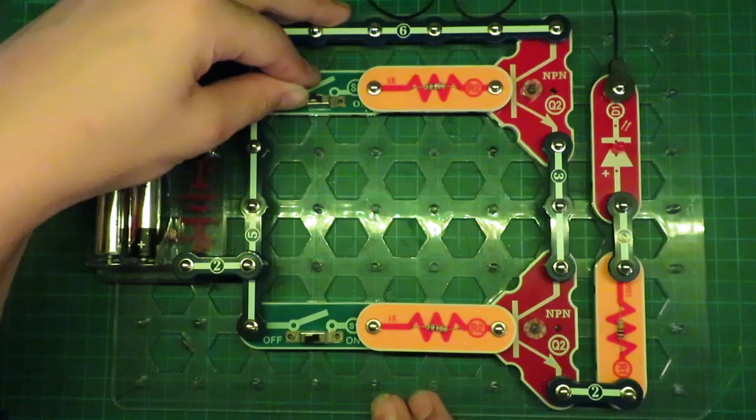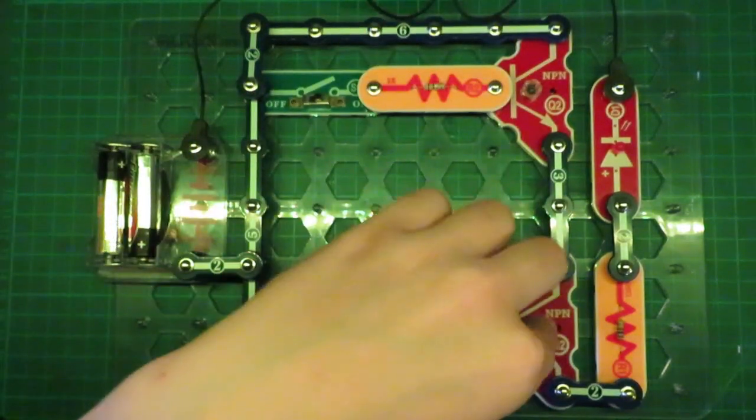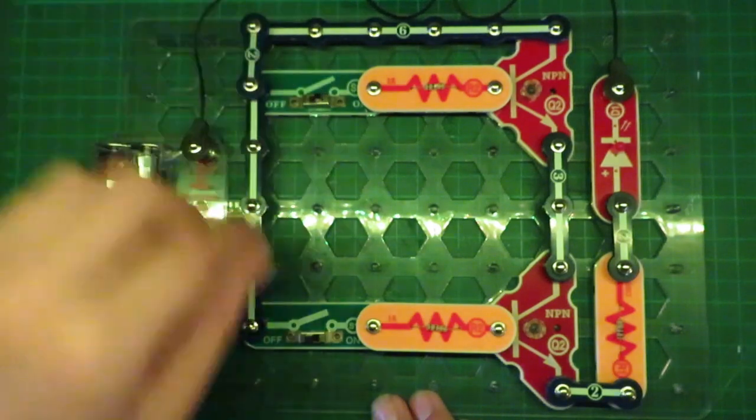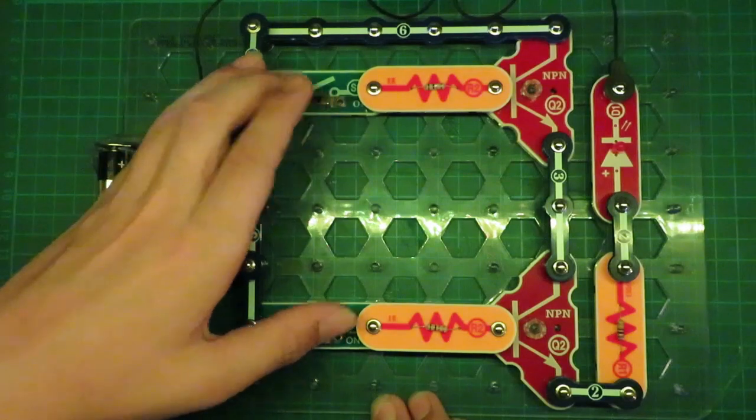So we begin our operation, we turn on this transistor right now, but no electricity can flow because this transistor is off. We turn them both on, and the LED glows just fine. I'll shut them both off.